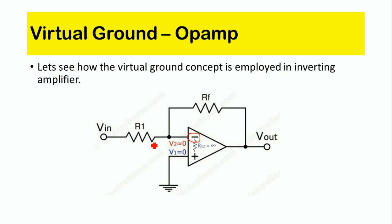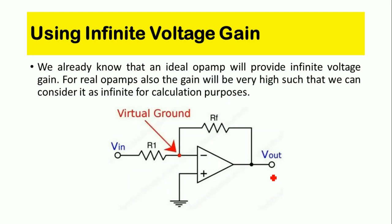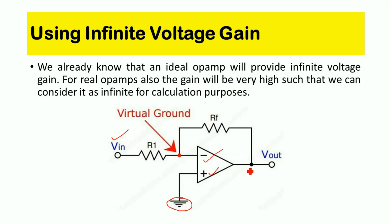In this circuit, Vin is connected to the negative terminal and the positive terminal is connected to ground. So the positive terminal is at ground, Vin is connected to the negative terminal, and there is a feedback resistor RF connected from Vout to the negative terminal.